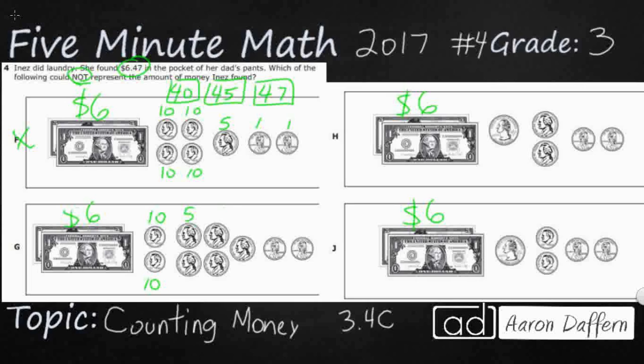But we know we're looking for the one that does not equal $6.47. So I've got two dimes. Looks like I've got five nickels here, and then I've got two pennies. So we'll count the same way. We've got 10, 20. Let's put a box to kind of keep it separate. 25, 30, 35, 40, 45.